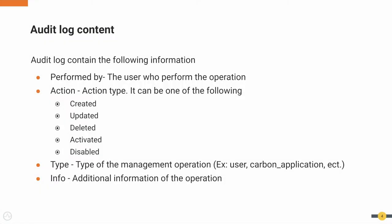These are the contents that are logged by the Micro Integrator audit logs. It contains the user who performed the operation, the action type — which can be created, updated, deleted, activated, or disabled — and the type of management operation, which can be a user, a carbon application, or a proxy service, along with any additional information.